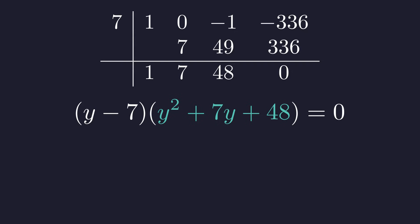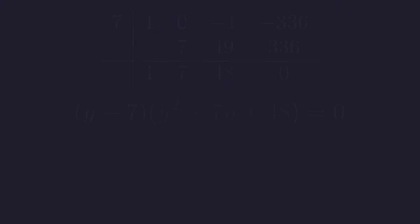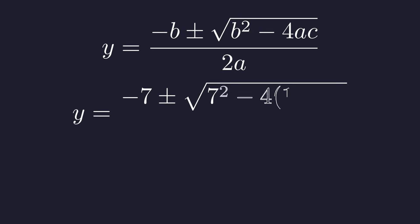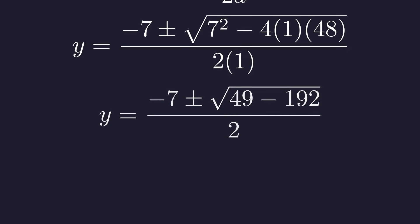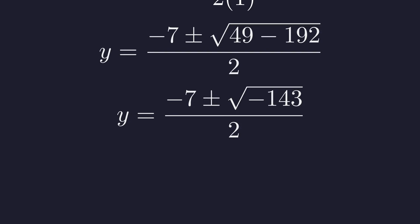If there are any other roots, they have to come from this quadratic factor. Let's find those roots using the quadratic formula. The quadratic formula tells us that the roots are negative b plus or minus the square root of b squared minus 4ac, all divided by 2a. For our quadratic, a is 1, b is 7, and c is 48. Plugging these in we can now solve for y. Inside the square root we have 7 squared, which is 49, minus 4 times 48, which is 192. The term inside the square root simplifies to negative 143.